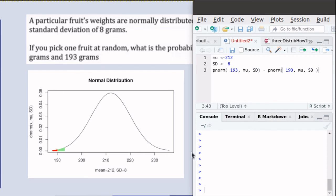So we'll take that green area minus the red area, and that's going to give us the probability that we're looking for. And so we'll just run that script and there it is.